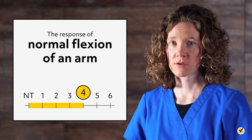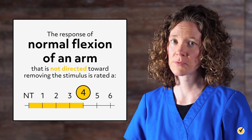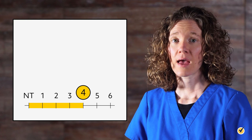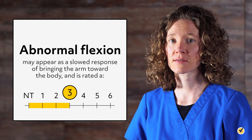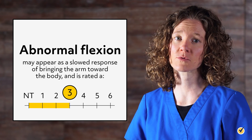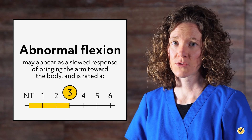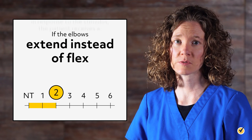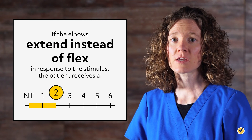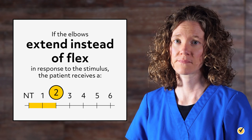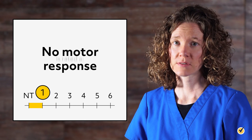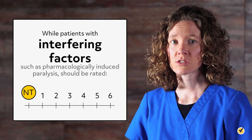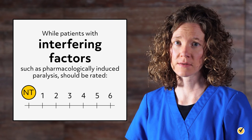The response of normal flexion of an arm that is not directed toward removing the stimulus is rated a 4. Abnormal flexion may appear as a slowed response of bringing the arm toward the body and is rated a 3. If the elbows extend instead of flex in response to the stimulus, the patient receives a 2 in this category. No motor response is rated a 1, while patients with interfering factors, such as pharmacologically induced paralysis, should be rated NT.